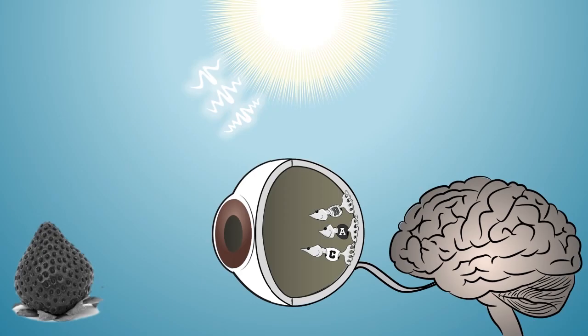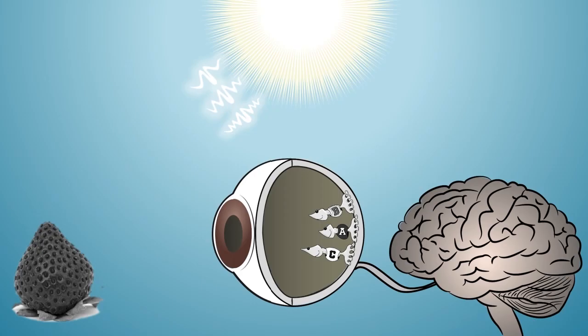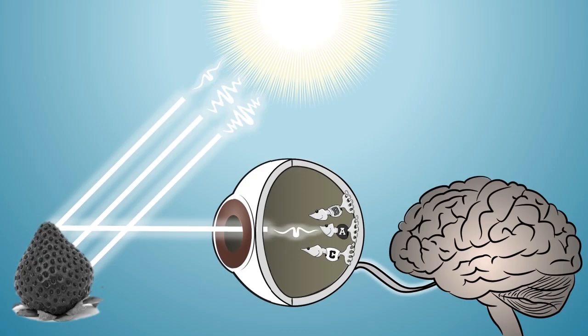But it is important to keep in mind that objects and light itself are not by themselves colored. Color is a mental perception. You see color because of the way your eyes and brain are constructed.